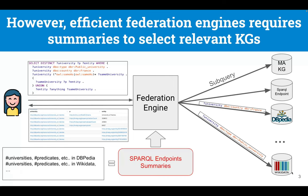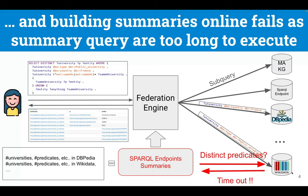However, to make this work, the federation engine needs summaries. Summaries provide basic statistics from all knowledge graphs that help the federation engine locate where the relevant information is for each query. To build these statistics, we need to send many queries to SPARQL endpoints.